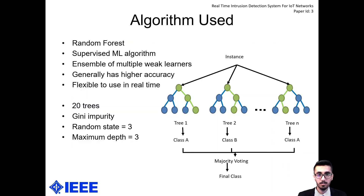The algorithm we used was random forest. It is a supervised machine learning algorithm and an ensemble of multiple weak learners — decision trees. We chose it because it generally has higher accuracy and is very flexible for real-time use. After hyperparameter tuning, we found that 20 trees, a random state of 3, and a max depth of 3 work best for our model. The impurity criterion we used was Gini.